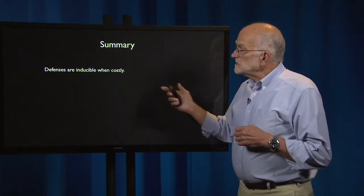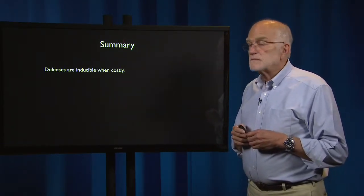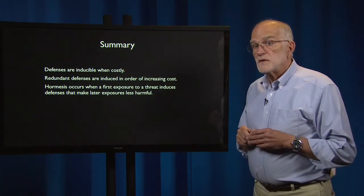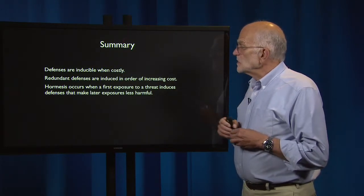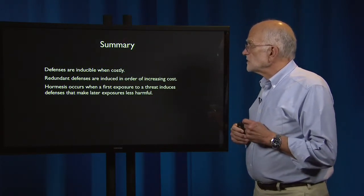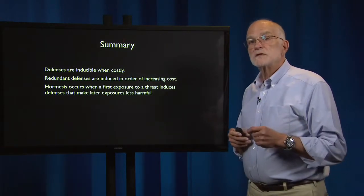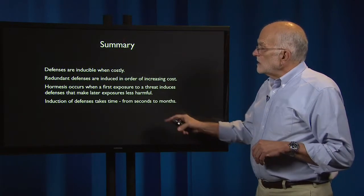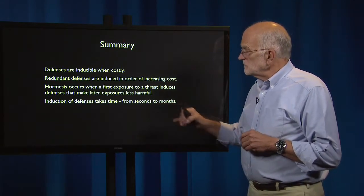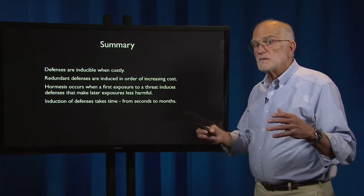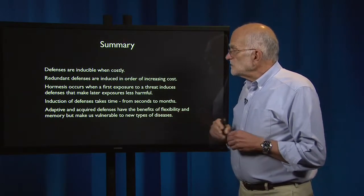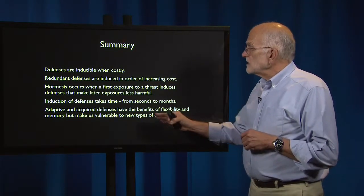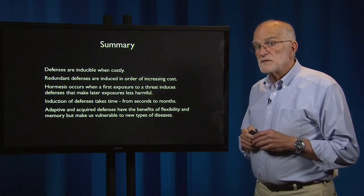To summarize: defenses are inducible when they are costly. Redundant defenses are induced in order of increasing cost. Hormesis occurs when a first exposure to a threat induces defenses that make later exposures less harmful and more rapidly dealt with. Induction of defenses takes time — from seconds to months, depending upon the factor and the type of defense. Adaptive and acquired defenses have the benefits of flexibility and memory, but those also make us vulnerable to new types of diseases.